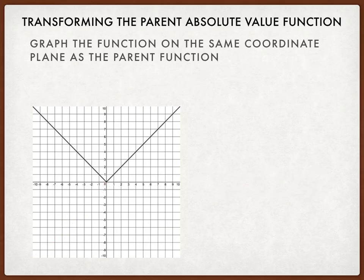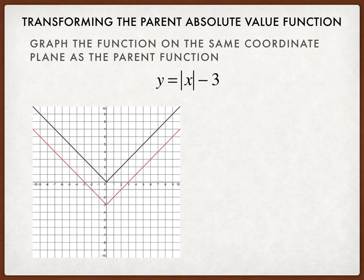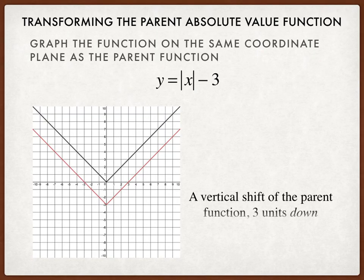Let's do another example. Y equals the absolute value of x minus 3. When I type this into Desmos, the picture that results looks like this red graph. So what we notice is we have a vertical shift of the parent function. It happens to be three units down. Notice in the equation form the minus 3 is outside of the absolute value bars.